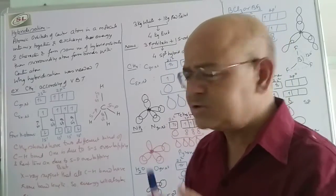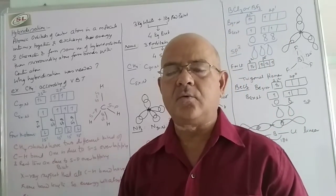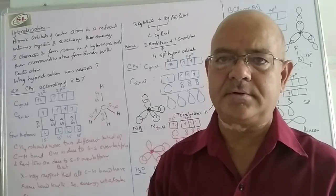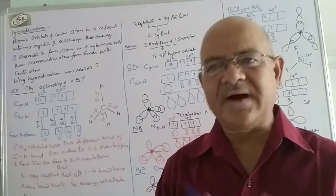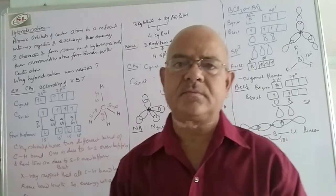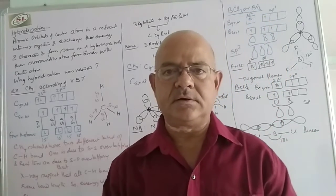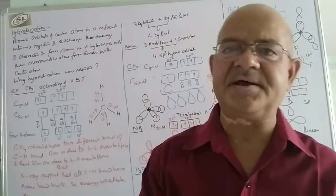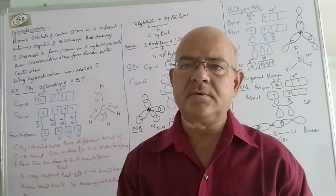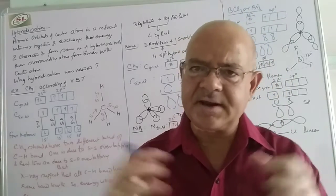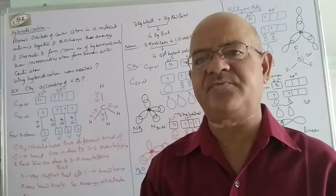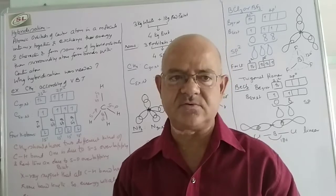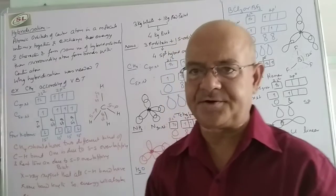The question is: why is hybridization needed? Why, before bonding by the surrounding atom with the center atom, should they get intermixed first, and then bonding will take place? What is the need for it?